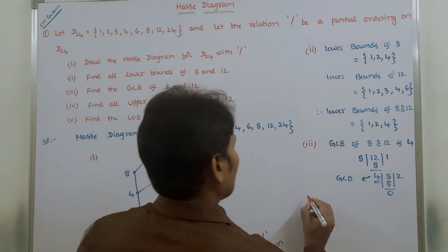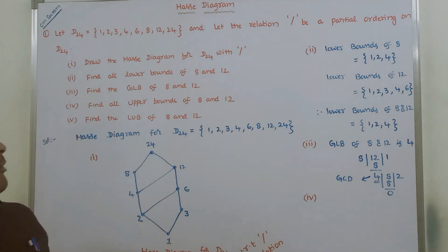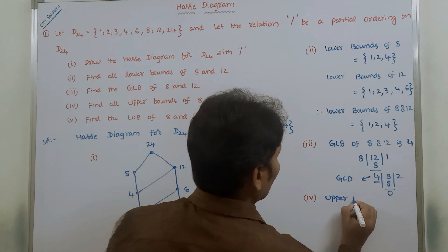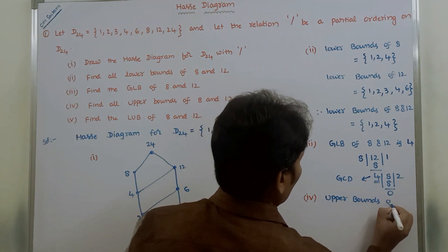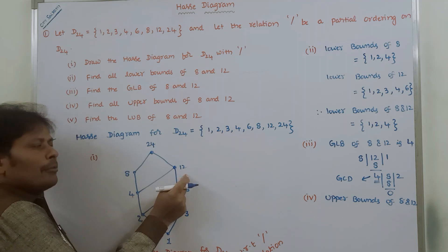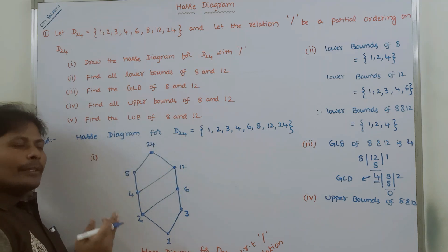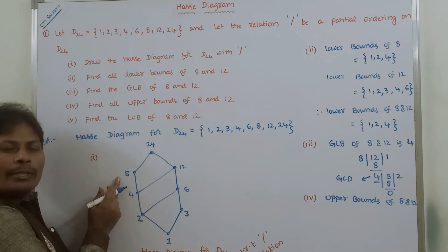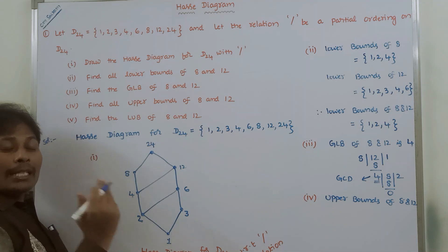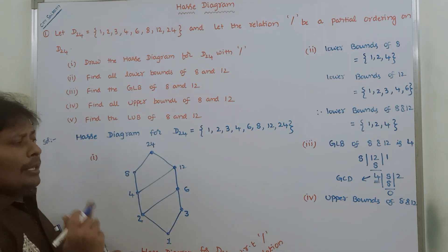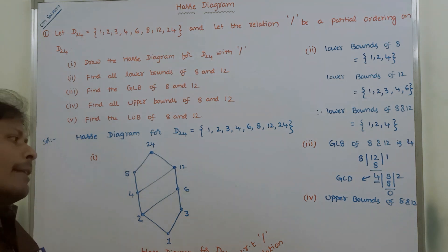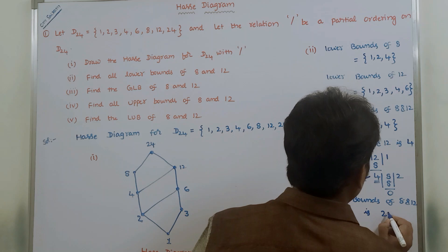For part four, find all the upper bounds of 8 and 12. We first find the upper bounds of 8 separately, then the upper bounds of 12, and take the common elements. In this case, for both 8 and 12, there is only one common upper bound element, which is 24.